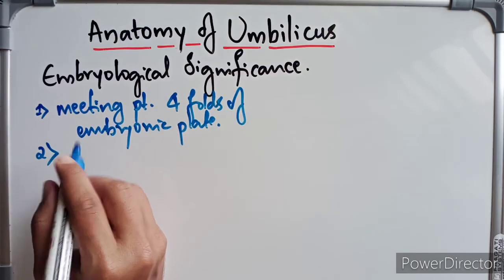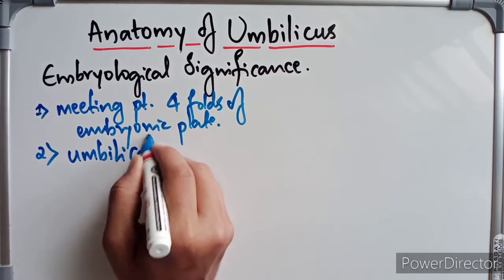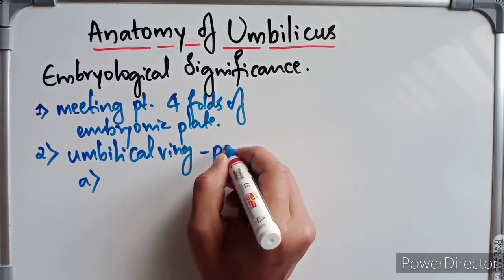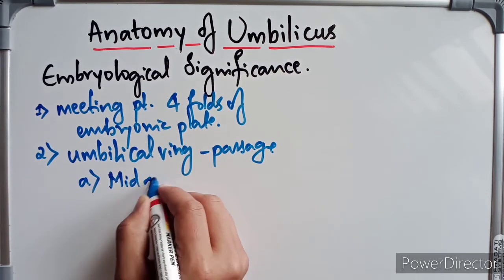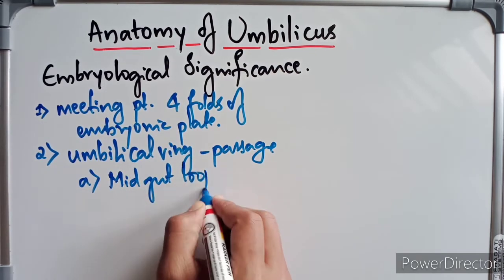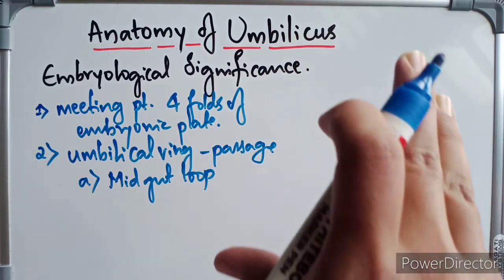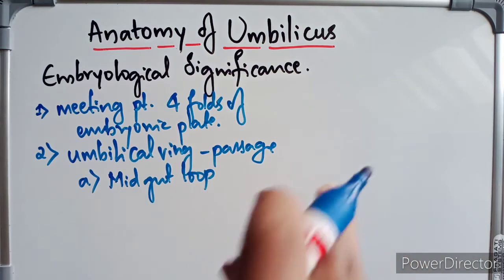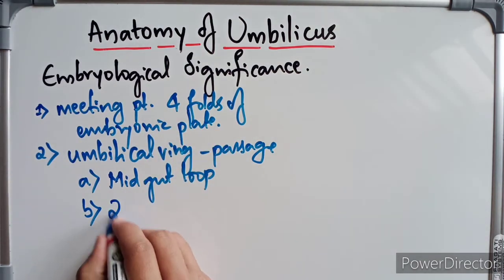The umbilical ring provides passage to, number one, the midgut loop. The midgut loop herniates into the umbilical cord during the 5th to 10th weeks of intrauterine life and returns back to the abdominal cavity during the 10th to 12th week of intrauterine life. The second structures are the two endodermal tubes.